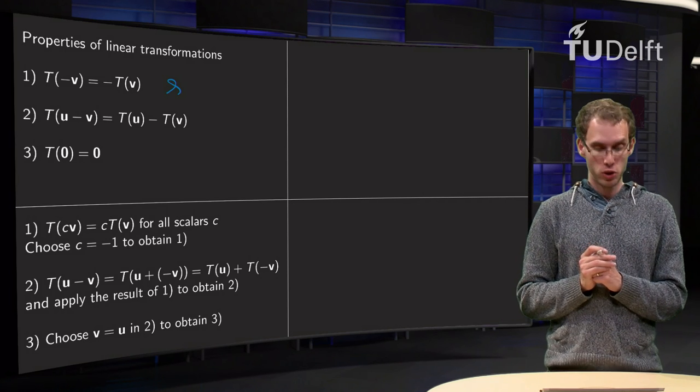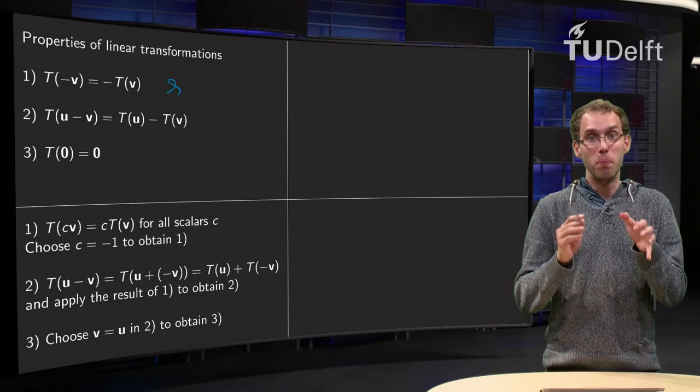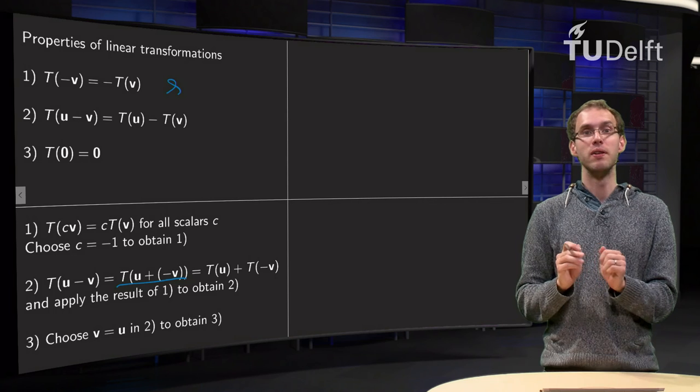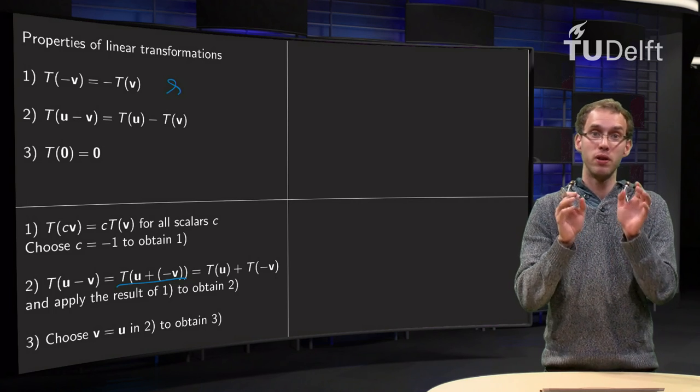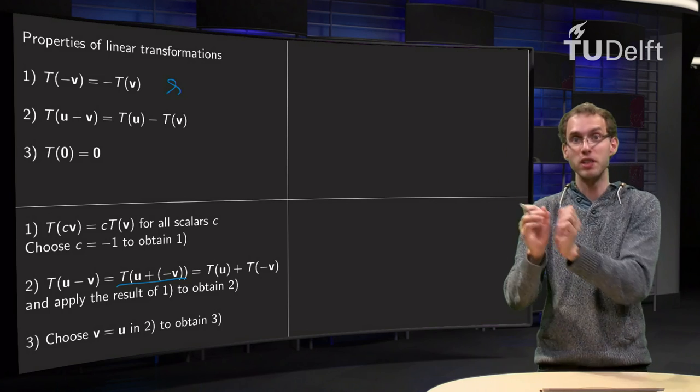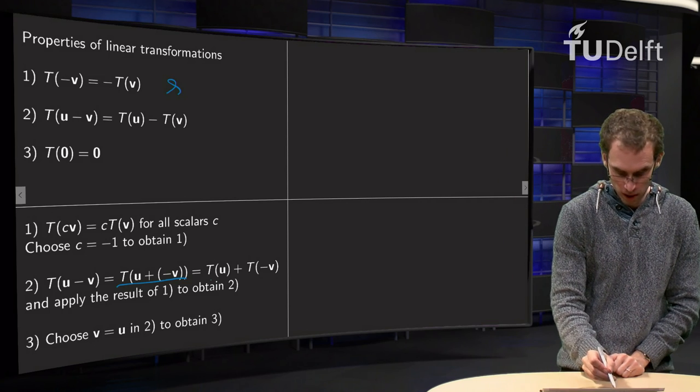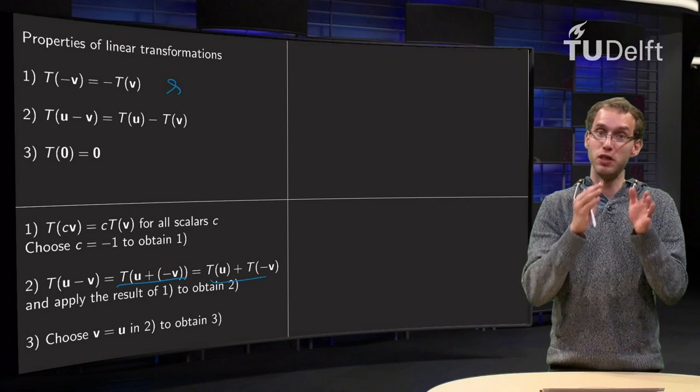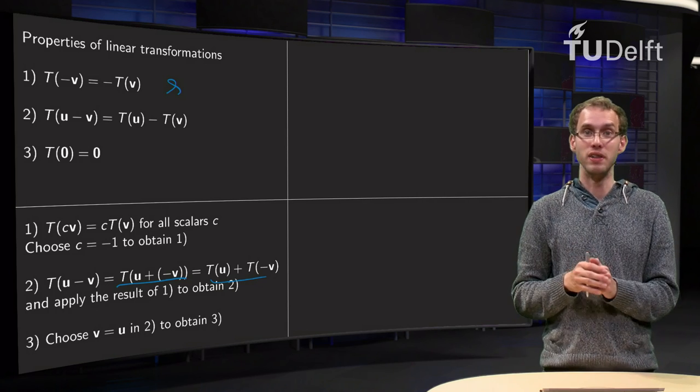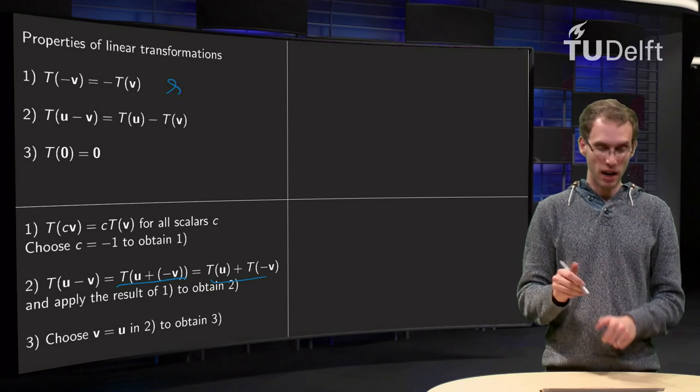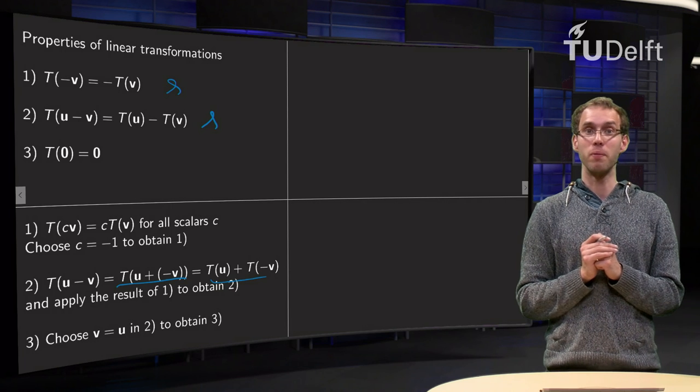What about property two? T of u minus v equals T of u plus minus v. We know that T of a sum equals the sum of the T's, so T of u plus minus v equals T of u plus T of minus v. Then you apply property one to take the minus in front and we have property two.